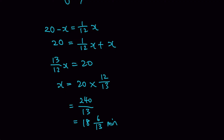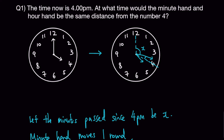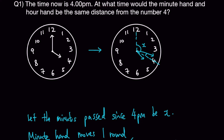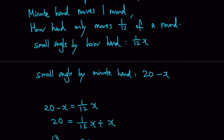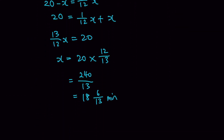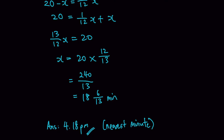Once you've found x, re-read the question — it asks at what time. The answer is 4:18pm, because the 6 over 13 represents seconds which cannot be shown on the clock through the minute and hour hand positions. So 4:18pm is the nearest minute, and that is your answer for question 1.